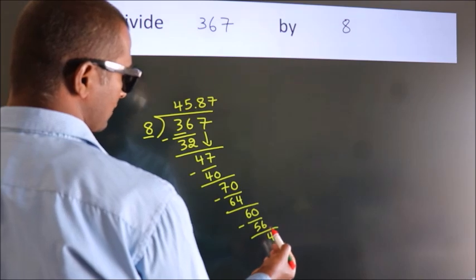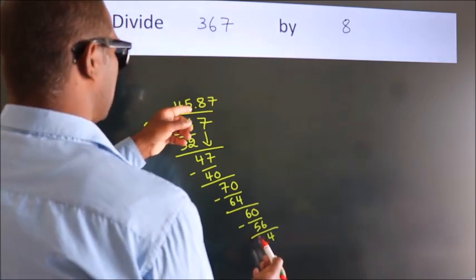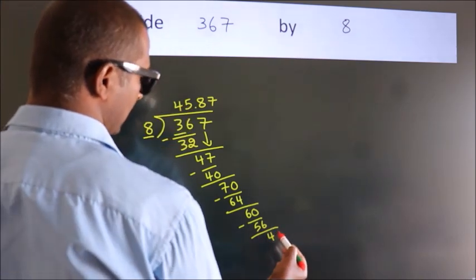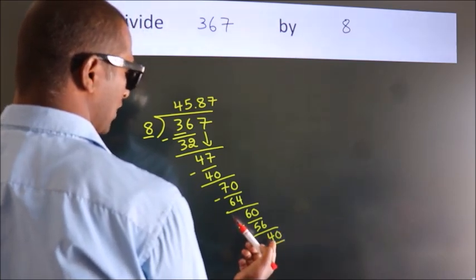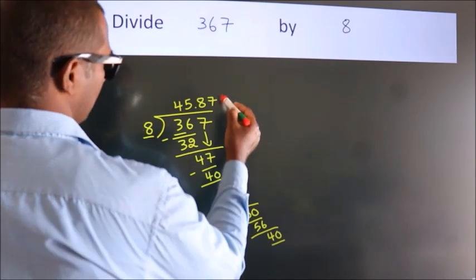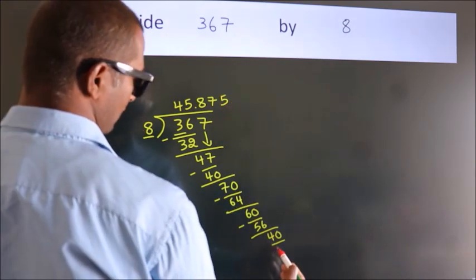After this, we already have the decimal, so directly take 0. So 40. When do we get 40 in the 8 table? 8 fives, 40.